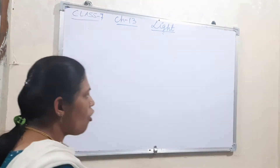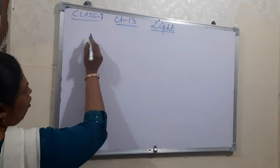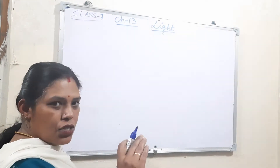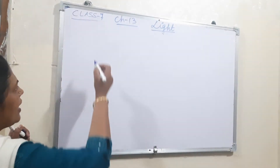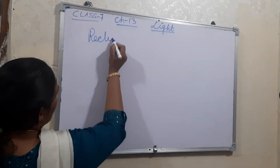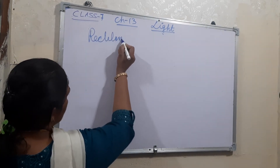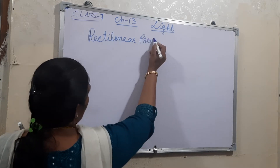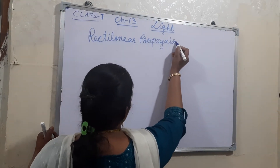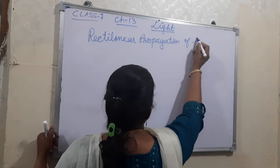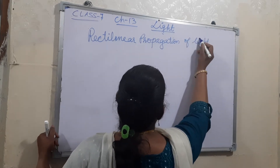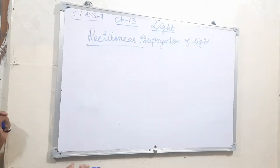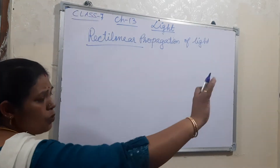The property of traveling of light in a straight line is known as rectilinear propagation. Rectilinear propagation of light. Rectilinear means moving straight — the light travels in a straight line.